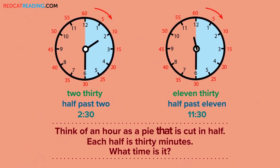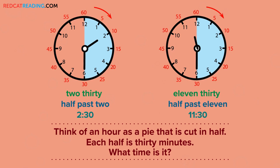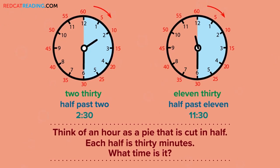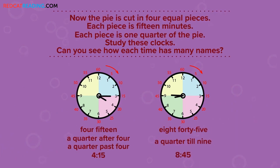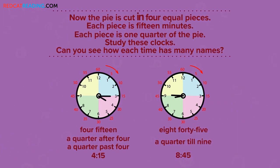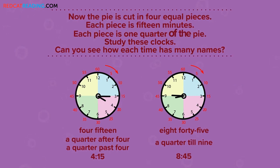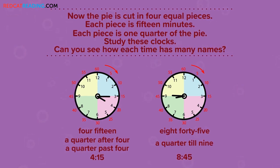Think of an hour as a pie that is cut in half. Each half is thirty minutes. Now the pie is cut in four equal pieces. Each piece is fifteen minutes. Each piece is one quarter of the pie. Study these clocks. Can you see how each time has many names?